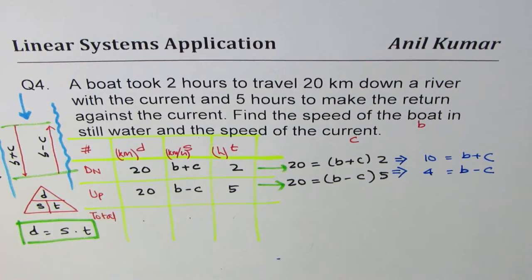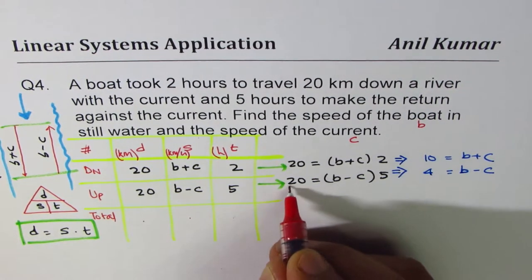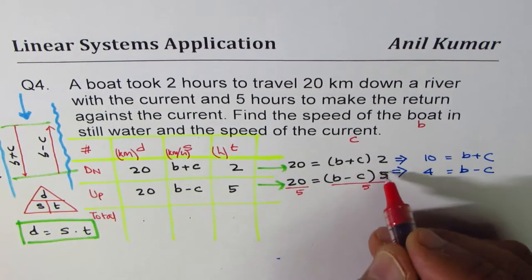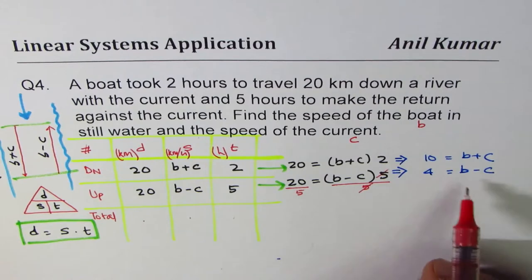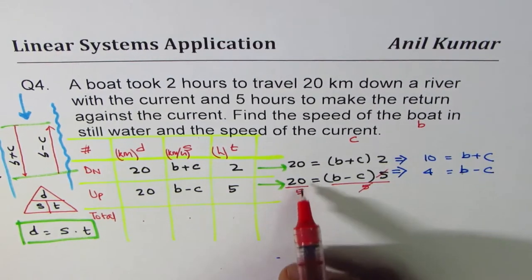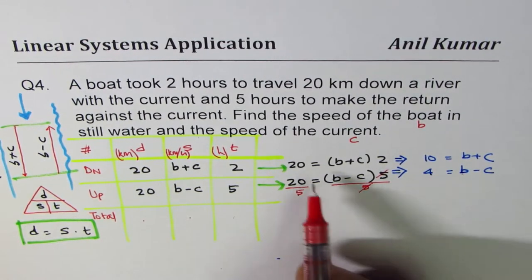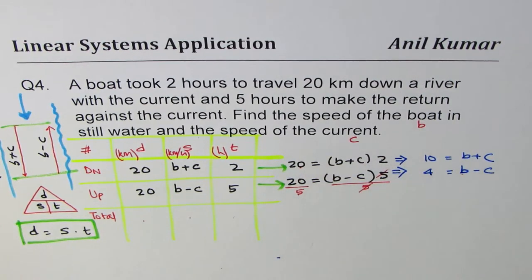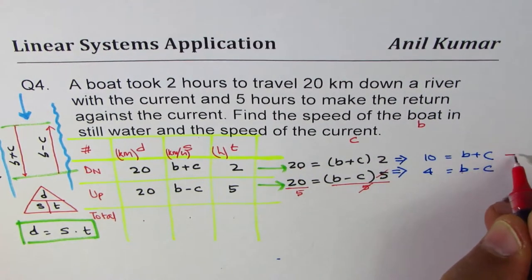And I get 20 divided by 5 is 4 equals to B minus C. So what we did here was we divided everything by 5 in this case. So this 5, 5 cancel. We are left with B minus C. 20 divided by 5 is 4. And in the first case, we divide 20 by 2. B plus C is 10. We will now call them as equation 1 and equation 2.